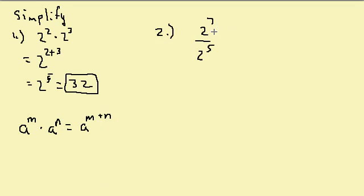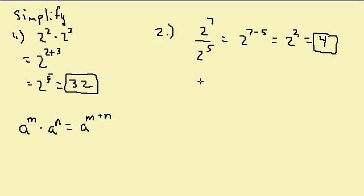Let's take a look at this one — we have division. The bases are the same, the 2 and the 2, so I subtract the exponents. So this would be 2 to the 7 minus 5, which equals 2 squared, which equals 4. The property used here is: a to the m over a to the n equals a to the m minus n. If you're dividing and the bases are the same, you subtract the exponents.